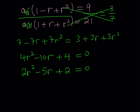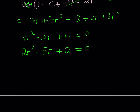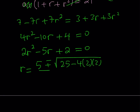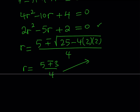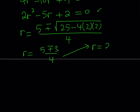This quadratic can be solved using the quadratic formula. We get r = (5 ± √(25 − 16)) / 4 = (5 ± 3) / 4. So r = (5 + 3)/4 = 2, or r = (5 − 3)/4 = 1/2. We have two possible values for r, which makes sense because the sequence can be written forwards or backwards.